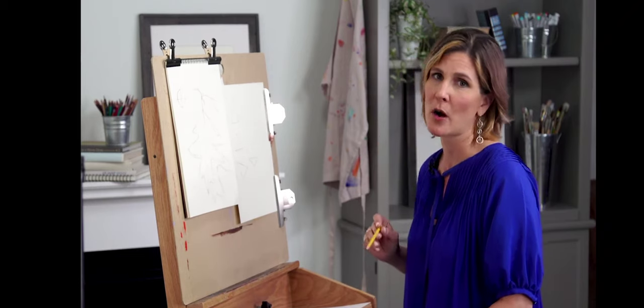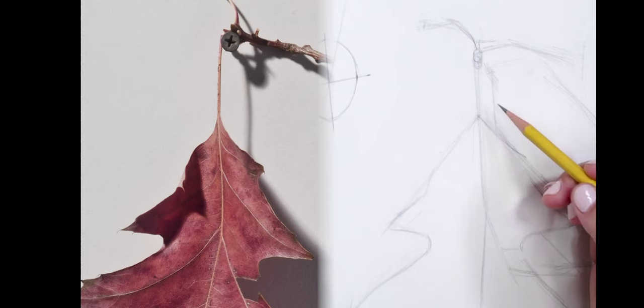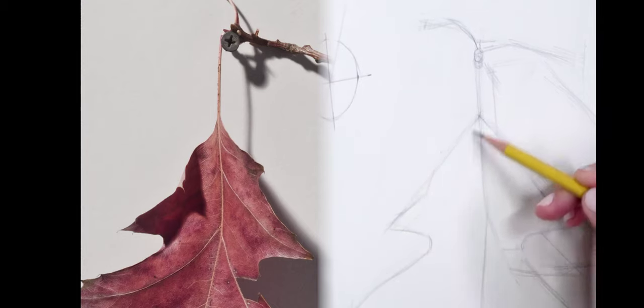We're going to start in one place and work our way around. I'm going to start up here at the top of the leaf, where it begins at the stem. And I'm, first of all, noticing from point to point, here to here.